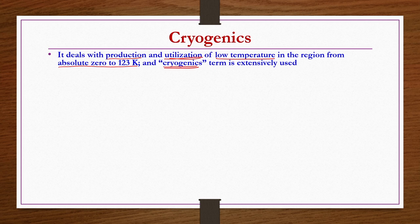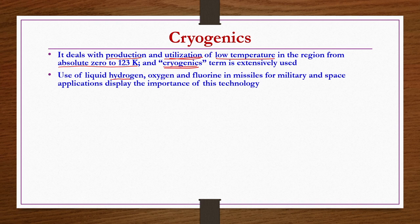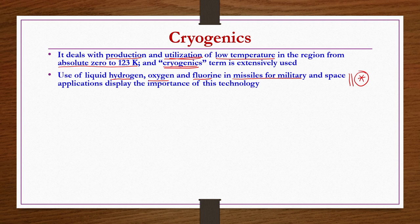What is so great about cryogenics and how important is it to study as a separate division? The use of liquid hydrogen, oxygen and fluorine in missiles for military purposes and space applications such as rocket propulsion are two important applications. Missiles for military use and components associated with space technology are very expensive and need careful atmospheric conditions for each element, so cryogenics must be studied in detail.